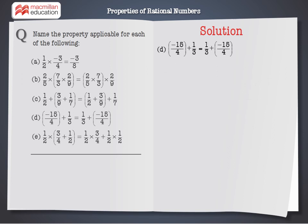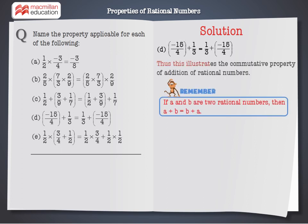This is quite straightforward. Again, the numbers are the same on both sides but the order of addition is different. Thus, this illustrates the commutative property of addition of rational numbers.